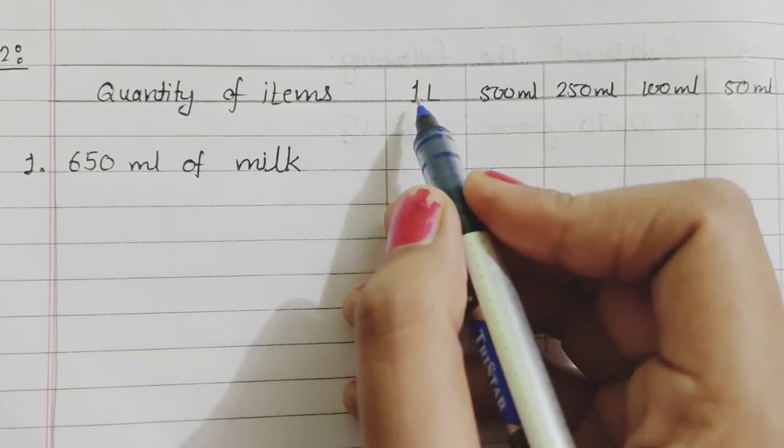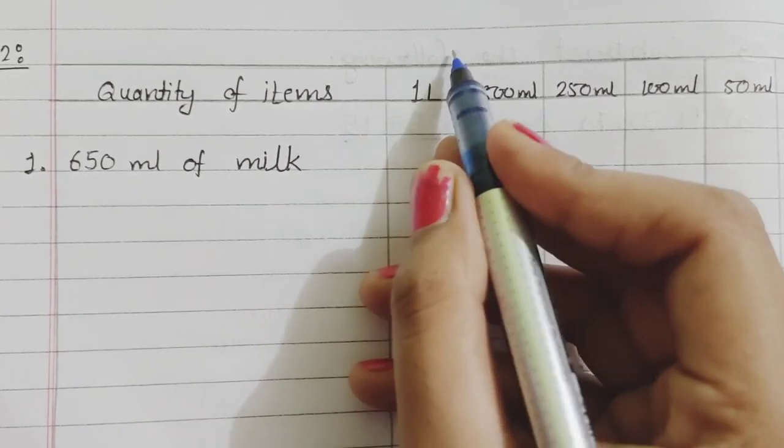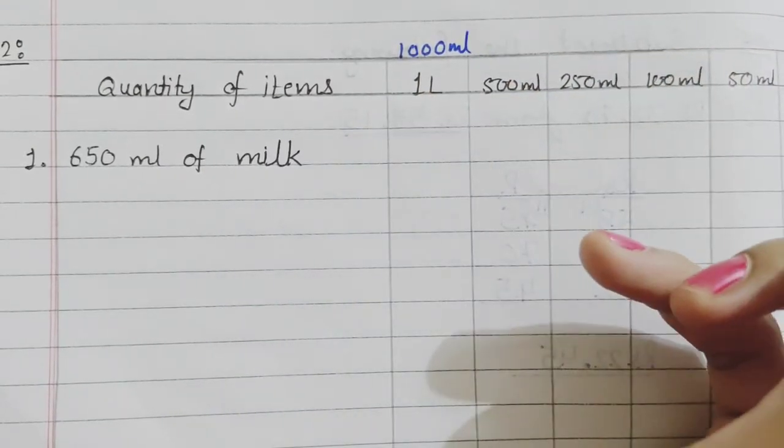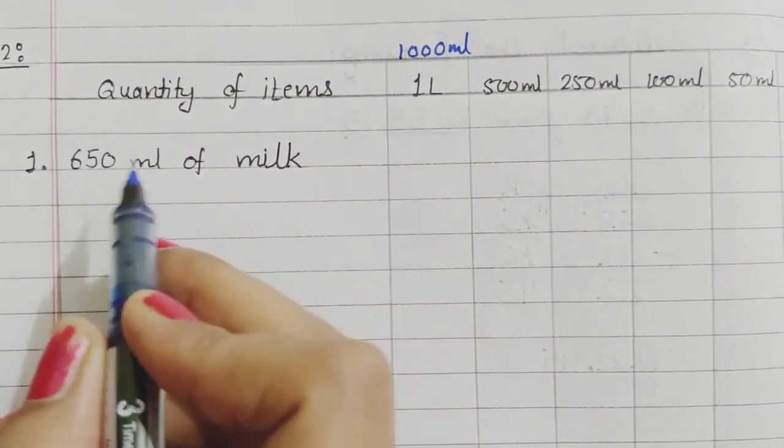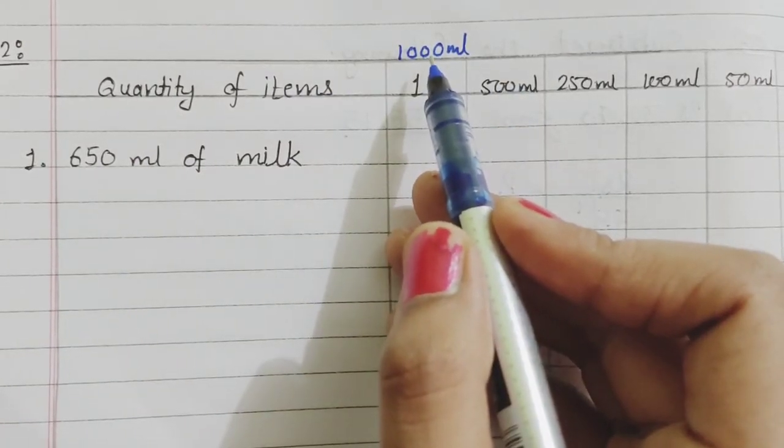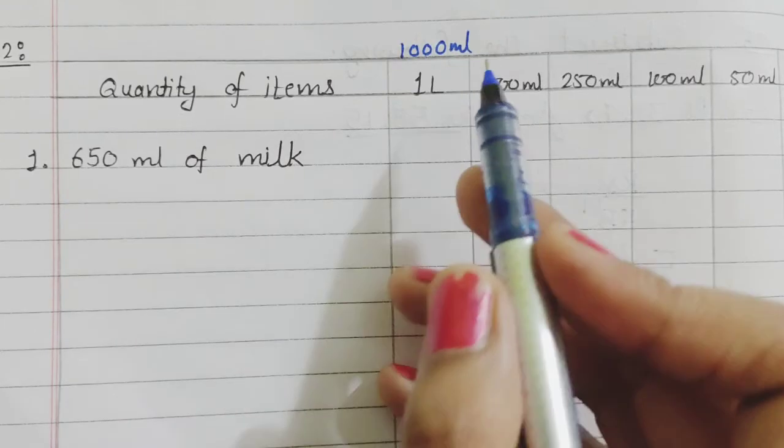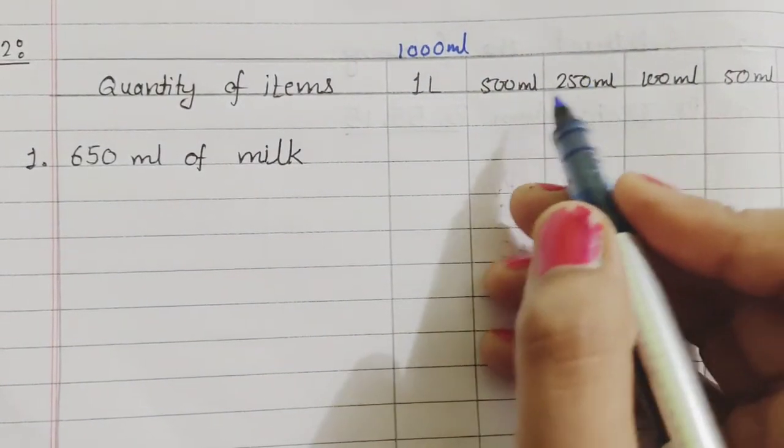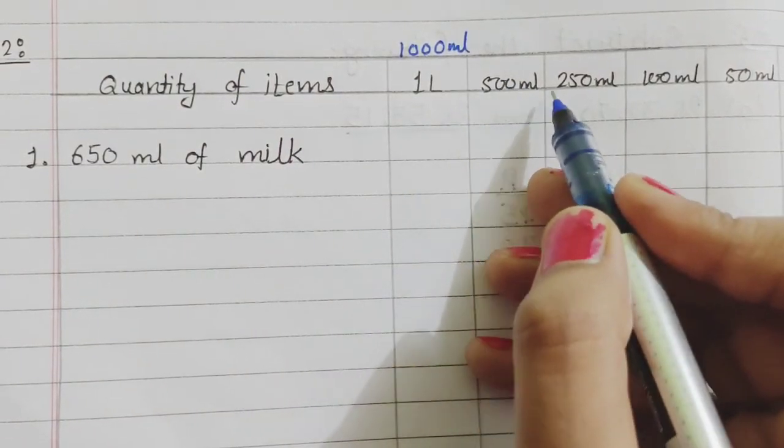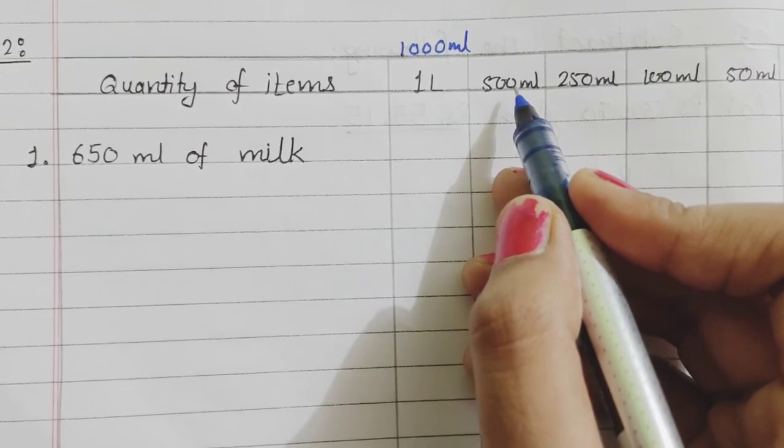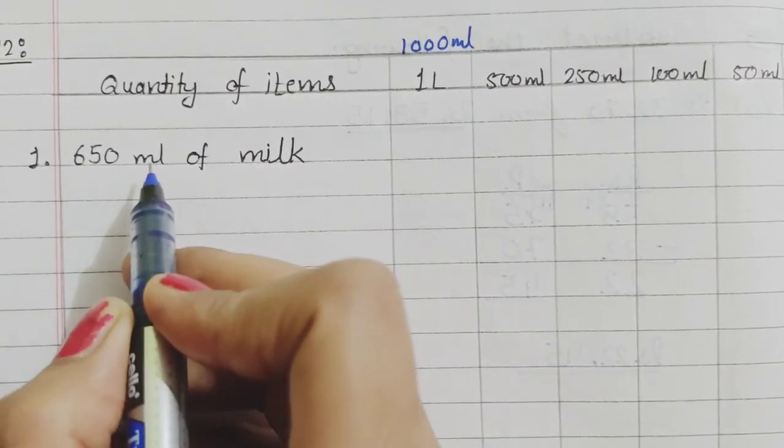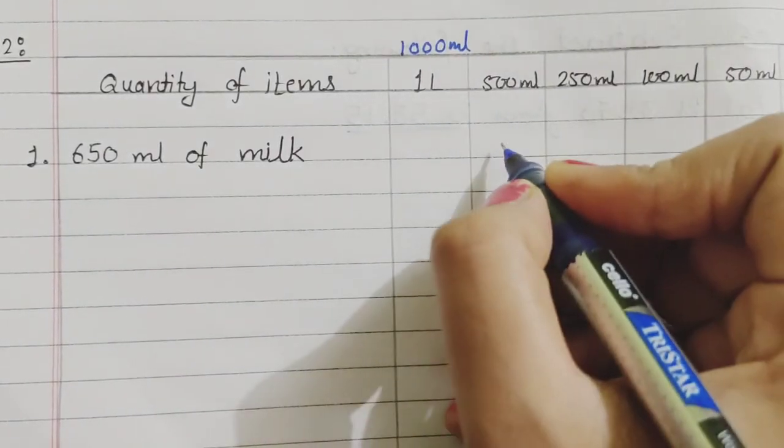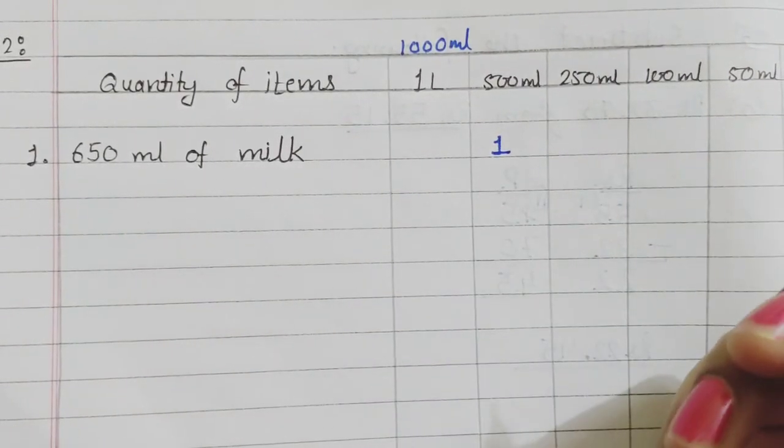The first one is 1 litre. We have to start checking from this first one. 1 litre means 1000 ml. Here we have 650 ml. 650 ml is smaller than 1000 ml, so we cannot use the 1 litre container. Now, move to the next one. Here we have 500 ml, so we can use this container. If we have 650 ml to measure, we can use this one. We can use it only one time.